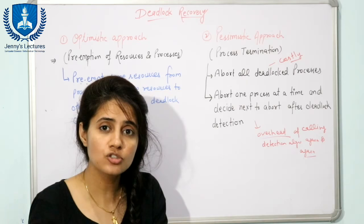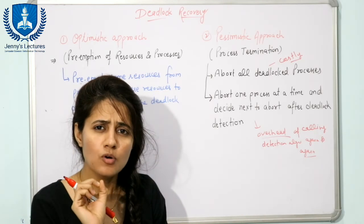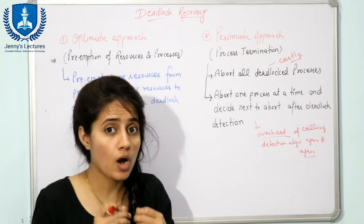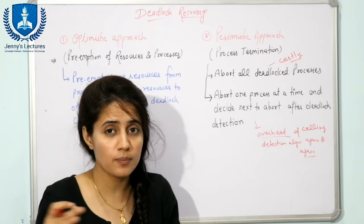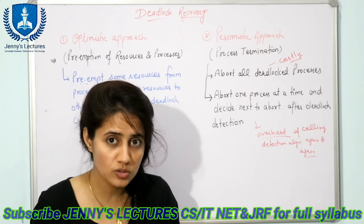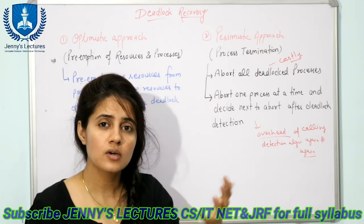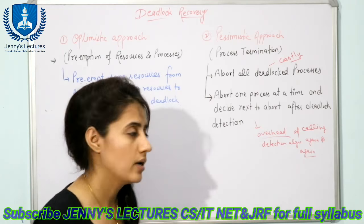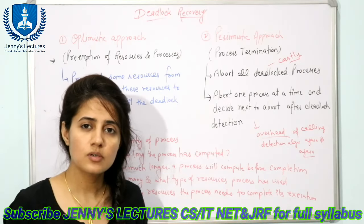The key principle is that we should terminate the process whose termination will cause minimum overhead and minimum cost to the system. To select such a process, there are many factors to be considered when choosing which process to kill.